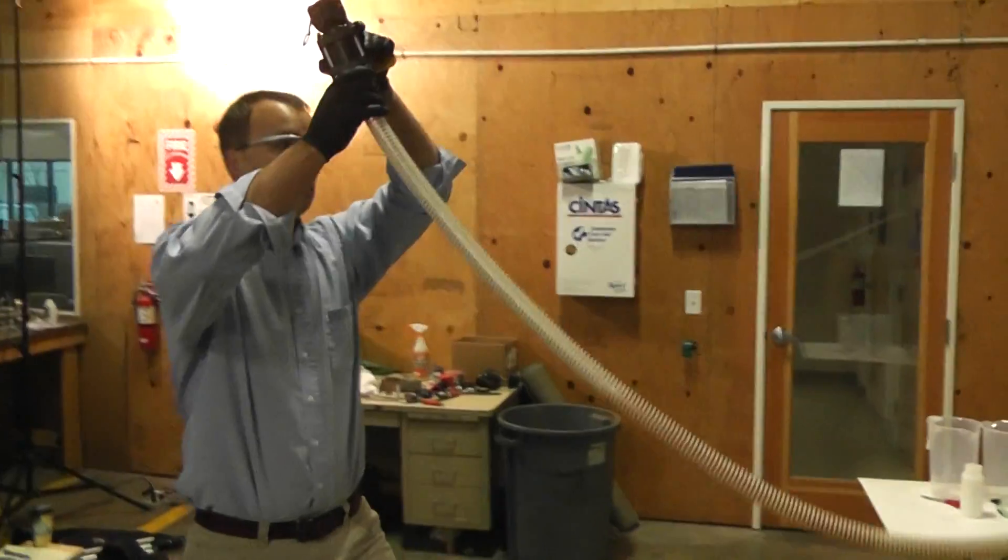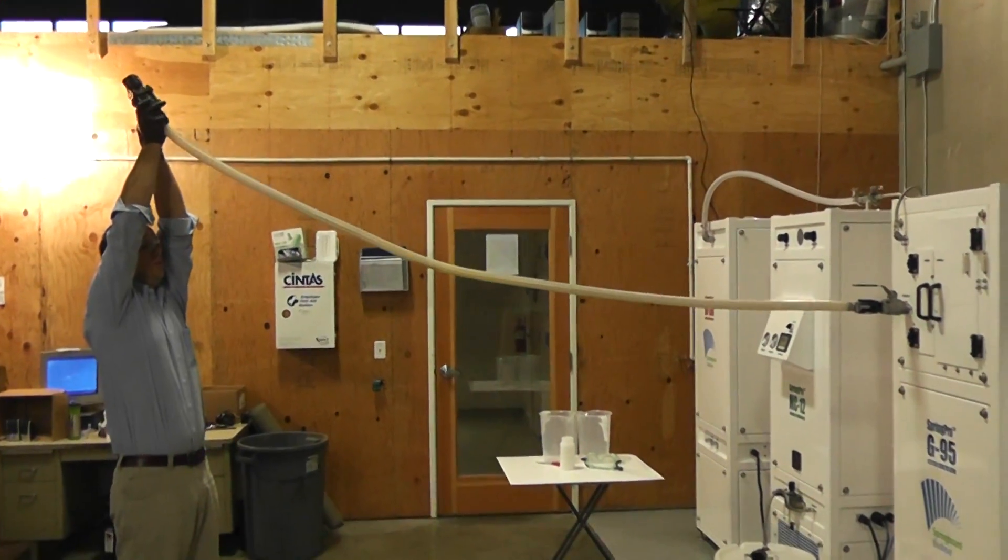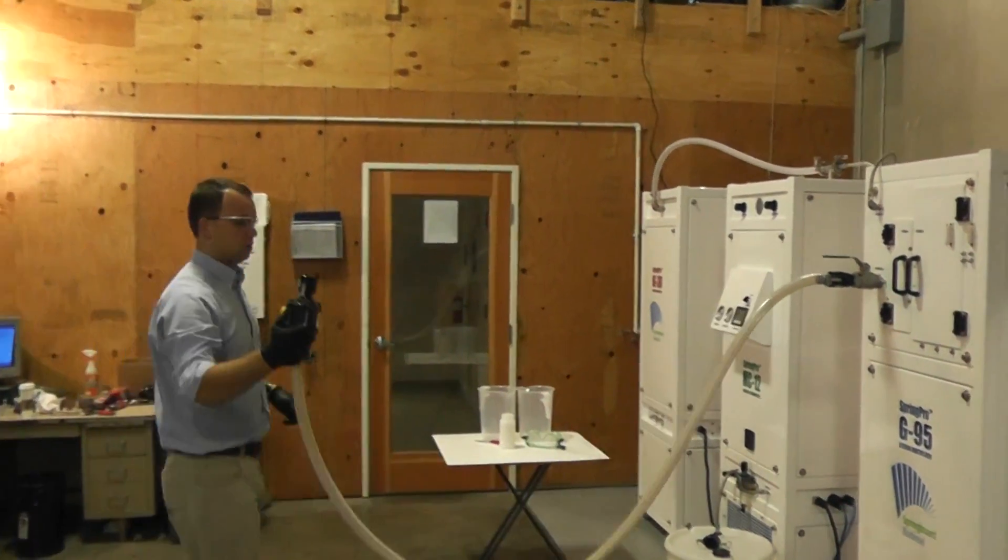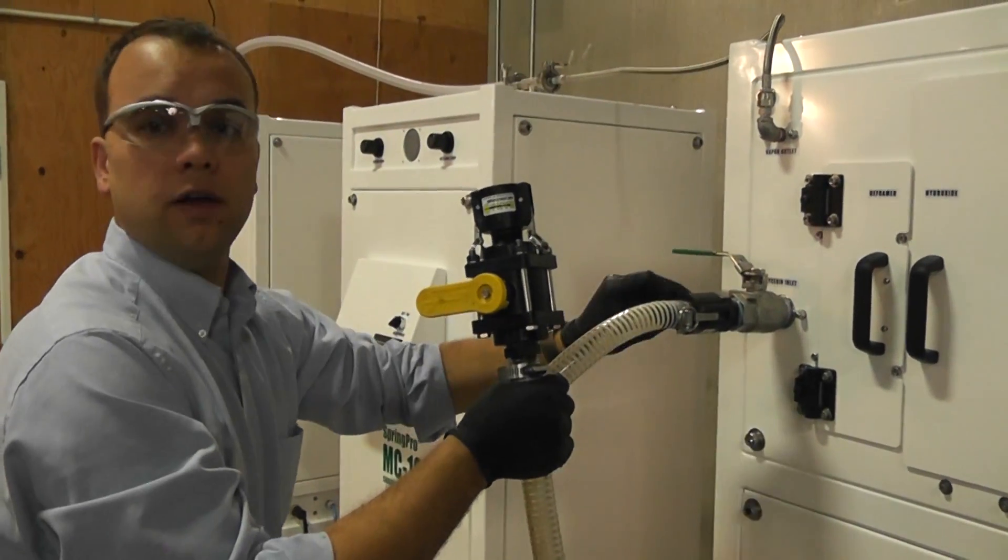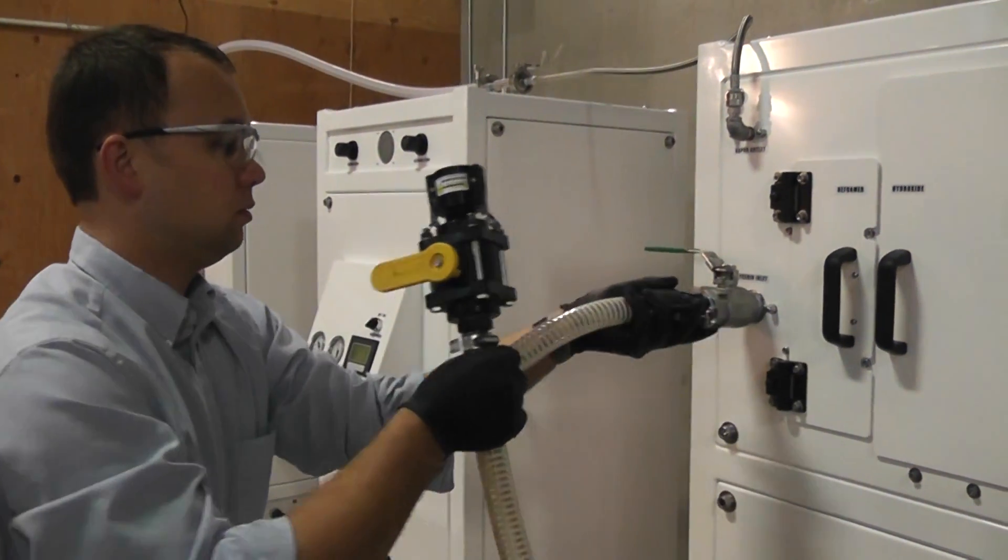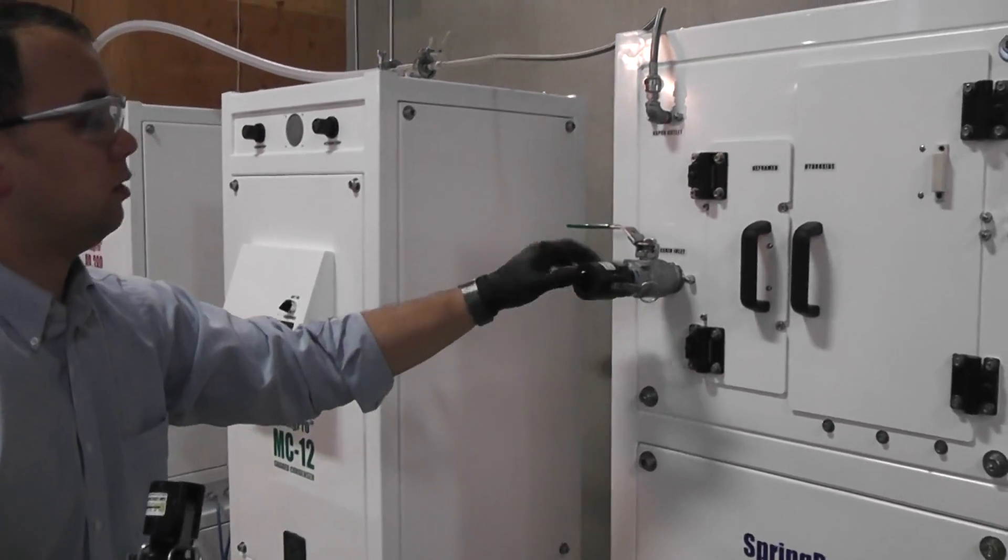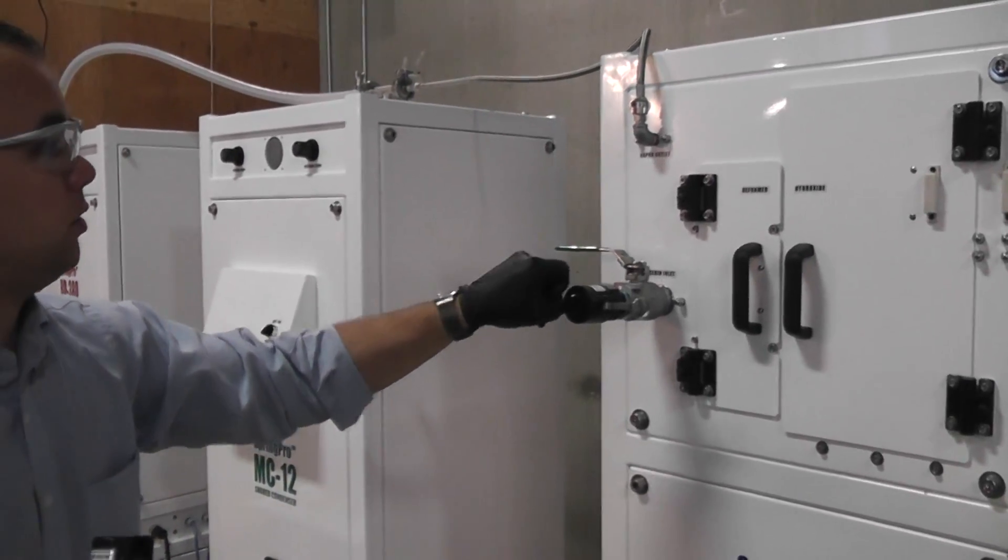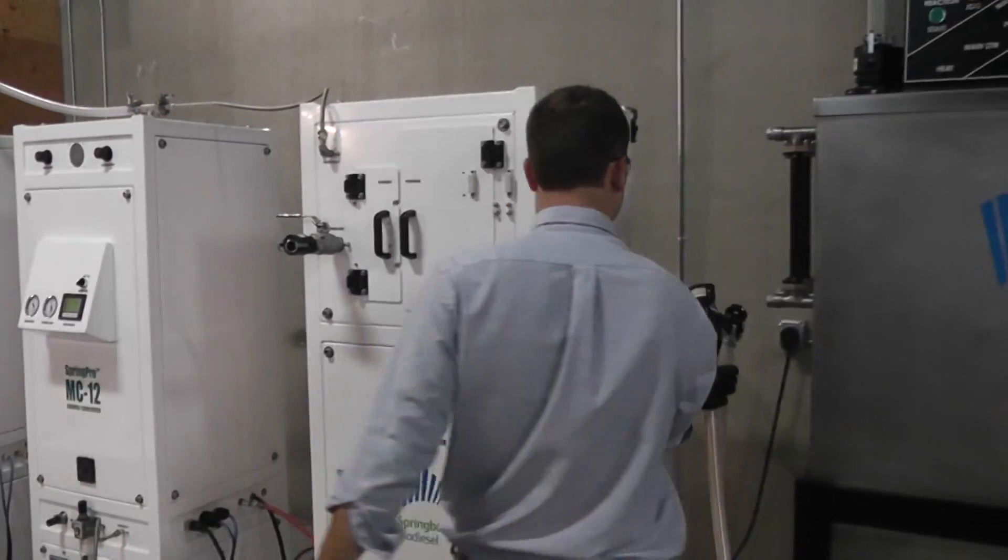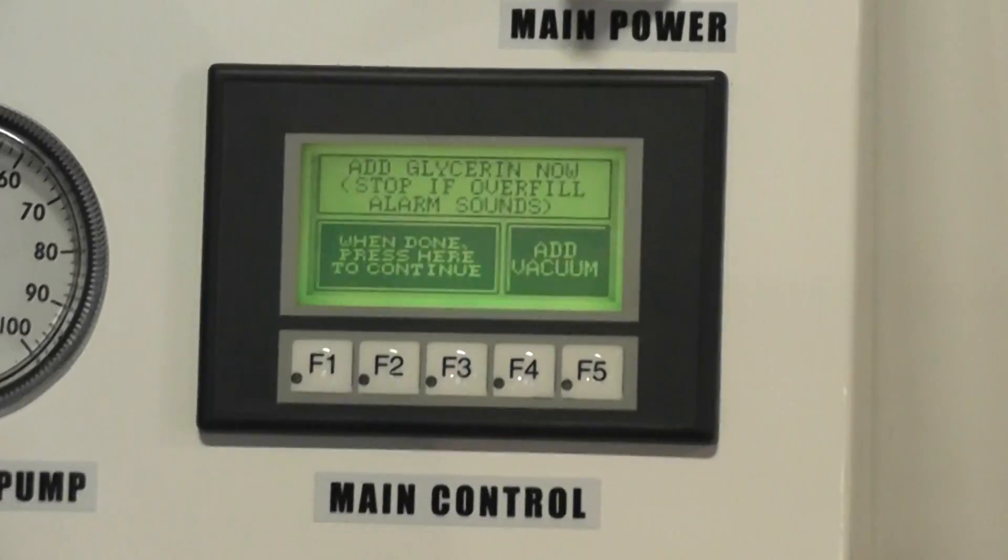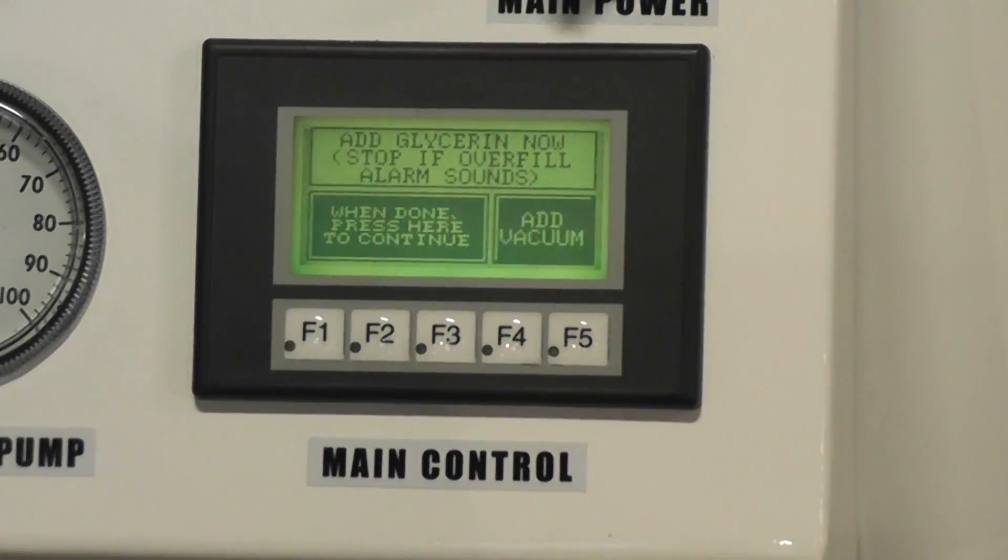Likewise, we'll try to get this hose to drip, get it cleared out. Close this valve. Put this back on, and we'll hang our hose back up. Alright, so we're done adding the glycerin. It says to press here when you're done.